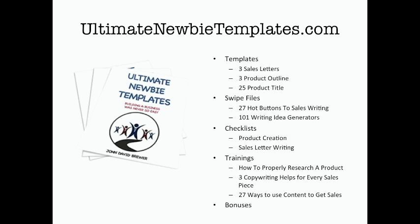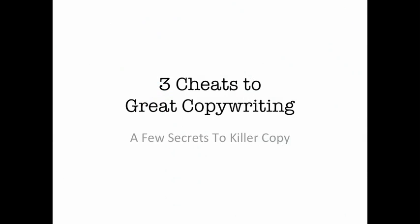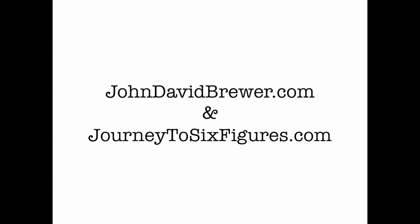You really want to pick up this item. I've thrown in some bonuses — I'll leave it up to you to go check it out to find out those bonuses. The price is way undervalued for what you're getting. All together you're getting many, many pages of content. Go get your copy at Ultimate Newbie Templates. This is Three Cheats to Great Copywriting. I'm John Brewer with johndavidbrewer.com and journeytosixfigures.com. We'll see you next time.